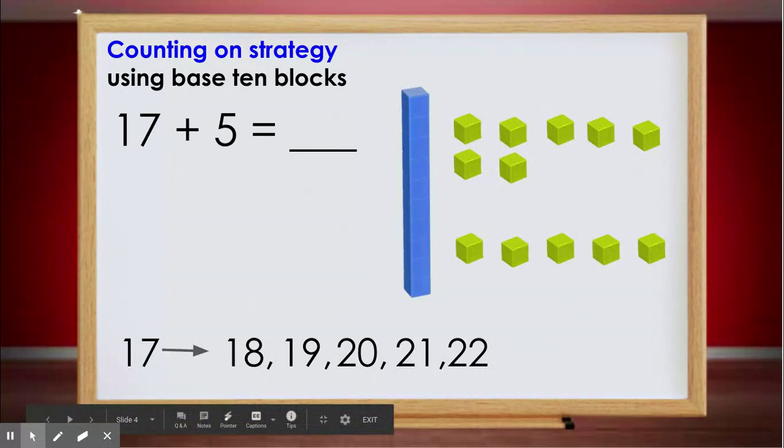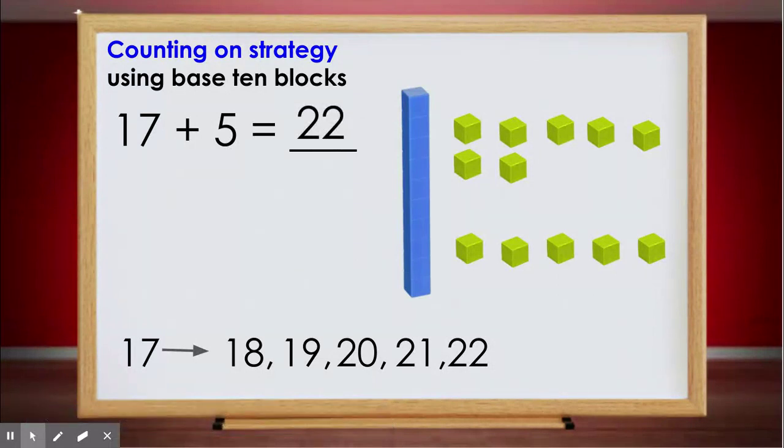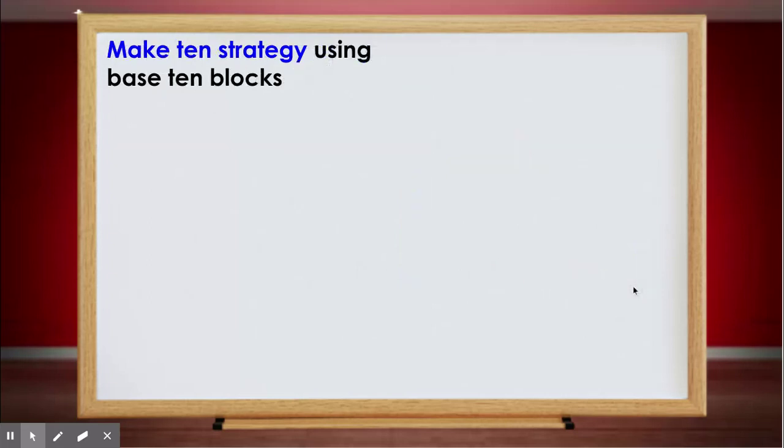I stopped at the last cube and I got the number 22, so that means 17 plus 5 equals 22. Do you notice that I did not start from the first object? I started from the first set of objects, the number 17, and hopped over counting on to the last number. Now let's continue again using 17 plus 5, but this time we're going to do the make 10 strategy.